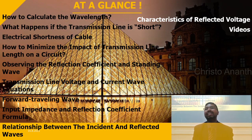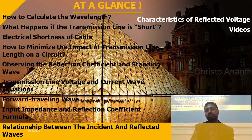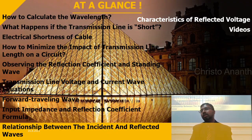In this class we will discuss how to calculate the wavelength, what happens if the transmission line is short, the electrical shortness of a cable, and how to minimize the impact of transmission line length on a circuit. We will observe the reflection coefficient and standing wave, the transmission line voltage and current wave equations, the forward traveling wave (FWT), input impedance, the reflection coefficient formula, and the relationship between incident and reflected waves.